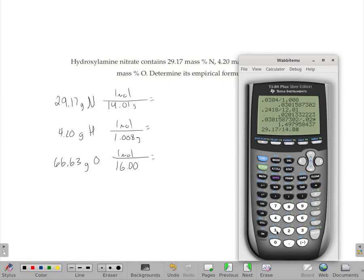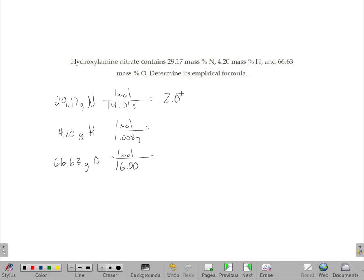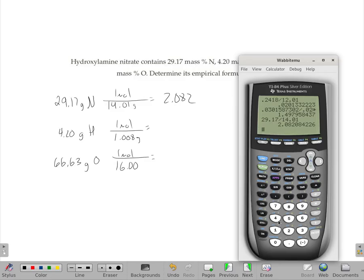The 4.2 divided by 1, about 4.2. 4.20 divided by 1.008 is 4.167.